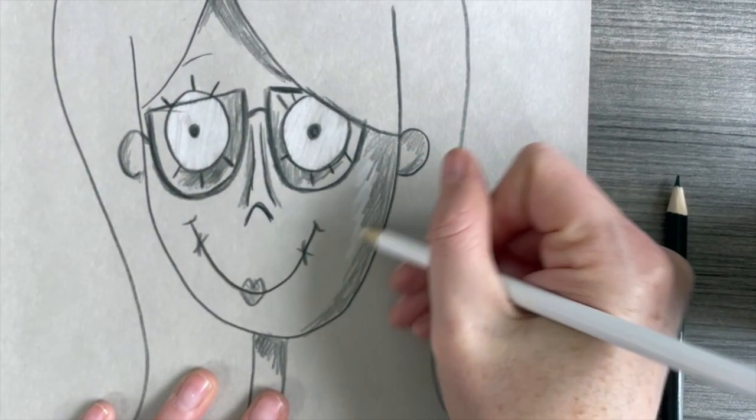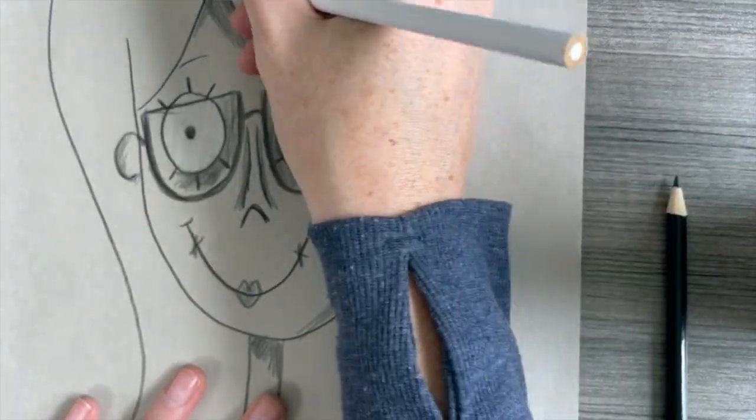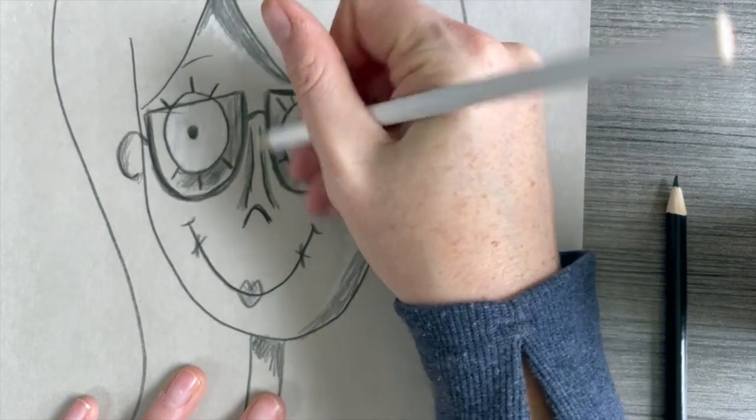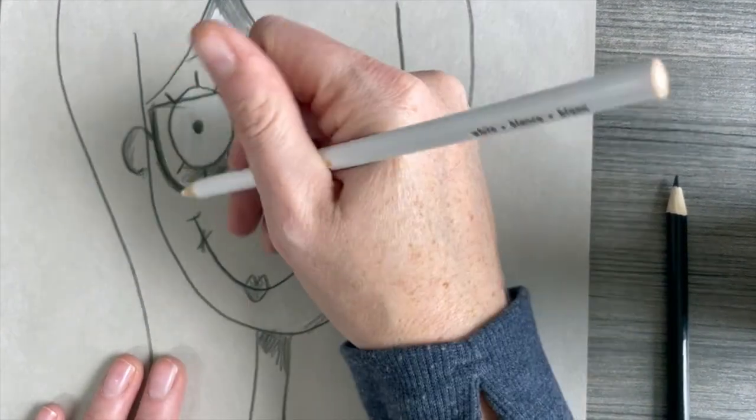Create some contrast with that white colored pencil. Go over areas like under the cheekbone, under glasses, so everything you just shaded near that adds some white.